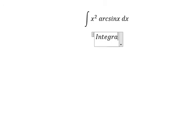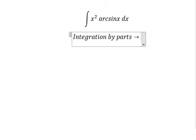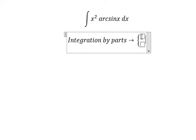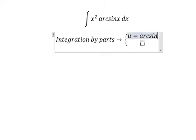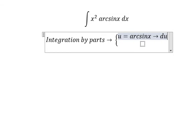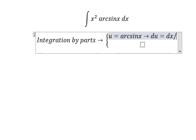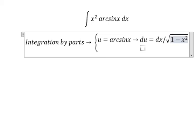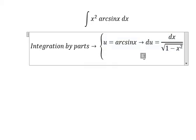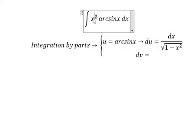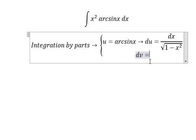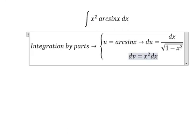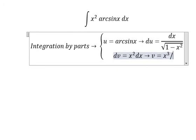We need to use integration by parts. So we have u equal to arcsin(x). Then we got du equals dx over the square root of 1 minus x square. For dv, we put x square dx. So we got v equal to x to the power of 3 over 3.